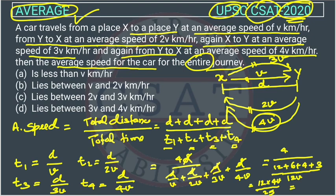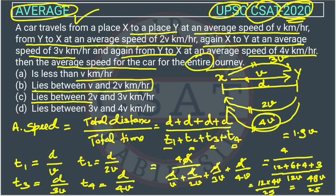This is equal to 48V/25, which is approximately 1.92V. So the average speed lies between V and 2V, which means option B is the correct answer, because it is less than 2V but greater than V. That is our average speed for the entire journey. If you still have some problem, you can contact us.